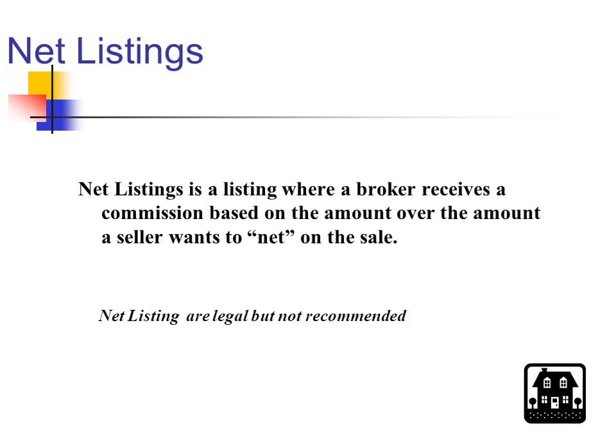Net listings. A net listing is a listing where a broker receives a commission based on the amount over the amount a seller wants to net on the sale. Basically, a seller is saying, 'I want to net $450,000 — anything over what I net, you can keep as a commission.' Net listings, by the way, are legal in Illinois. They're not recommended, so let's show how these are supposed to be computed.